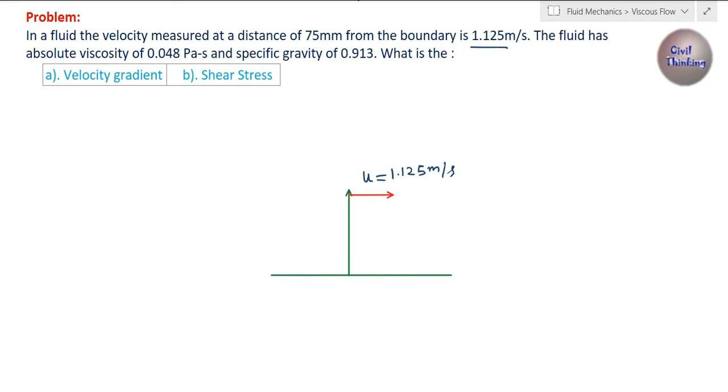It is at a distance of 75 millimeters. Now 75 millimeters is 0.075 meters. The distance y is 0.075 meters. The absolute or dynamic viscosity of the fluid is given to be 0.048 Pascal second. We are asked to find the velocity gradient of this fluid.